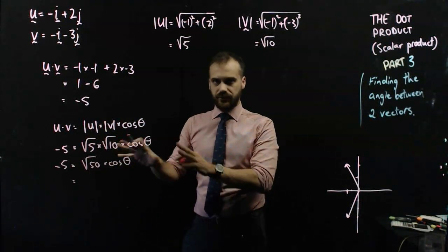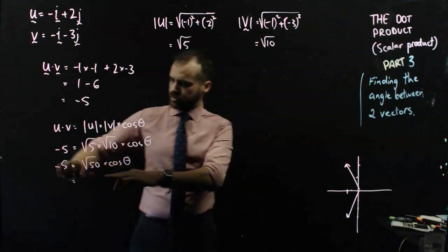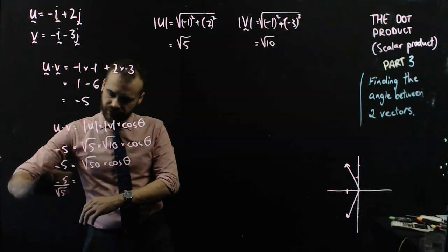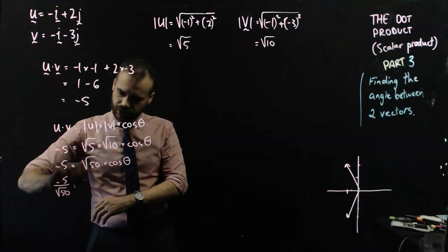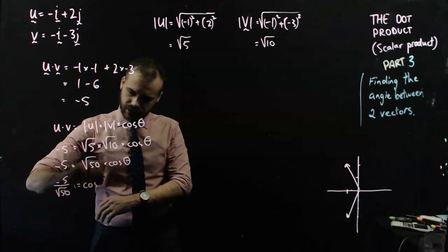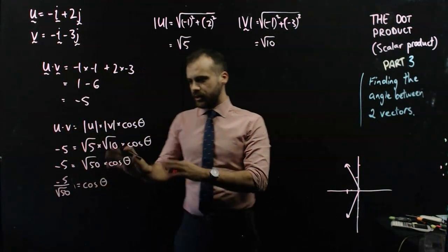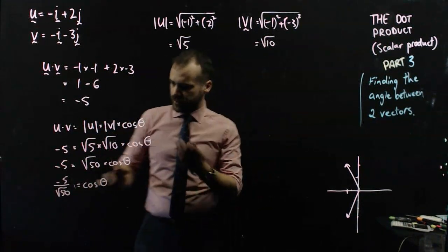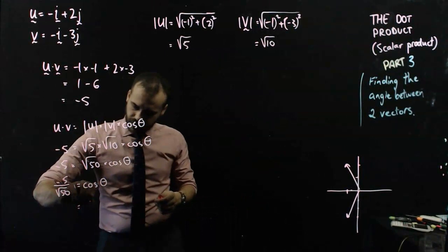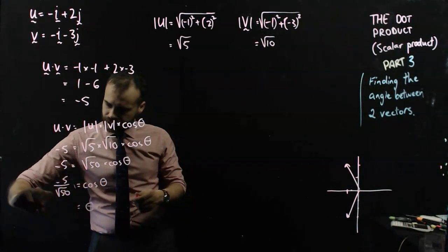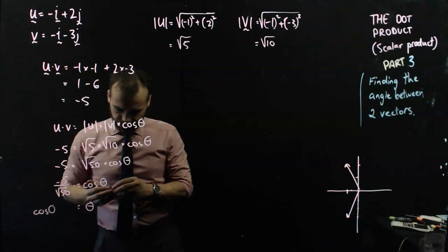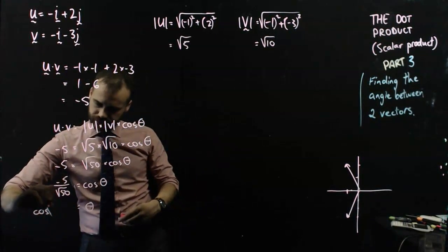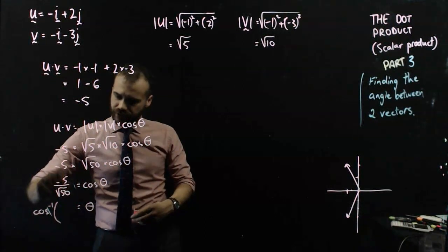Now, I need to get theta by itself to solve that. So, I'm going to do minus 5 over root 50, and that's going to be equal to cos theta. That's pretty good so far. I could simplify that third there, but I'll just leave that there for a second. Now, theta is going to be equal to inverse cos of that.